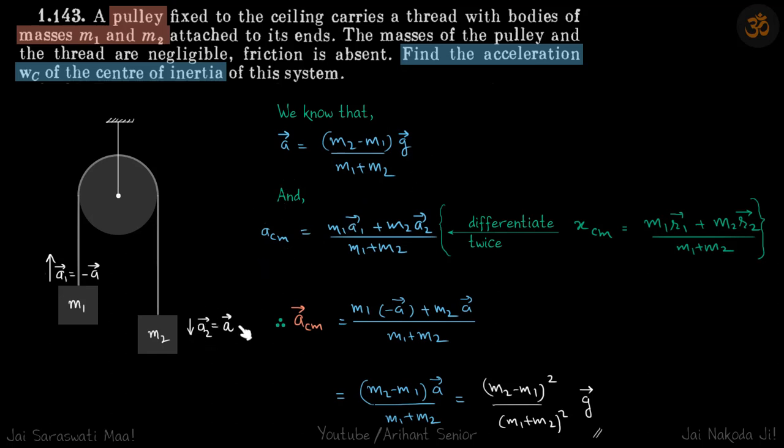In our definition, A is the acceleration of M2. M1's acceleration will of course be minus A vector, in the opposite direction but same magnitude. So A2 we are calling as A vector, and of course then A1 becomes minus A vector.